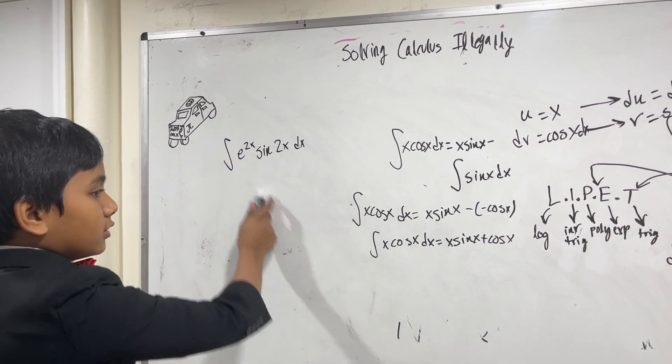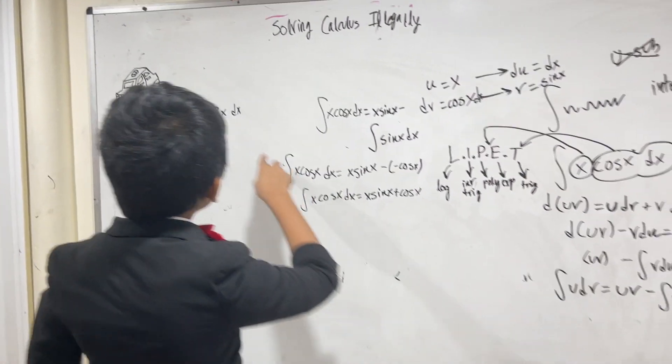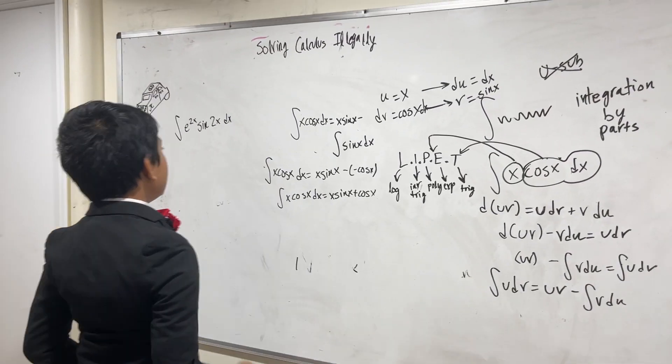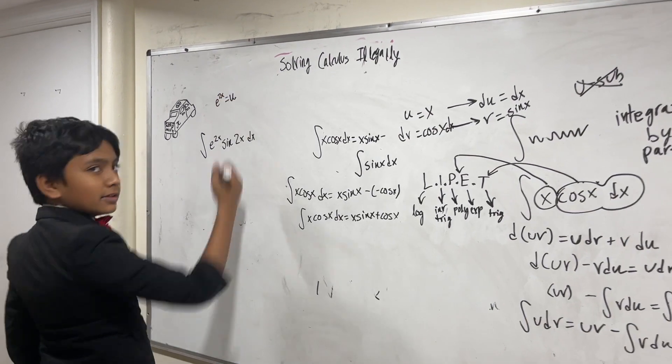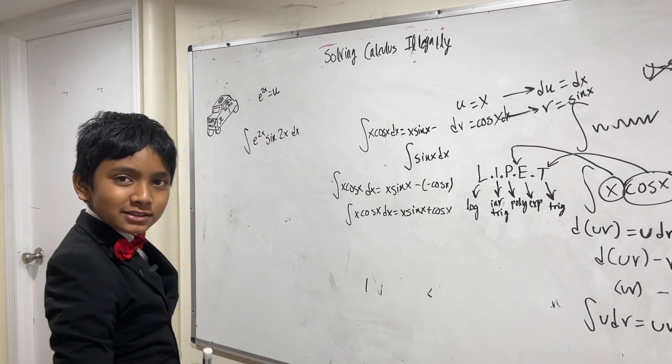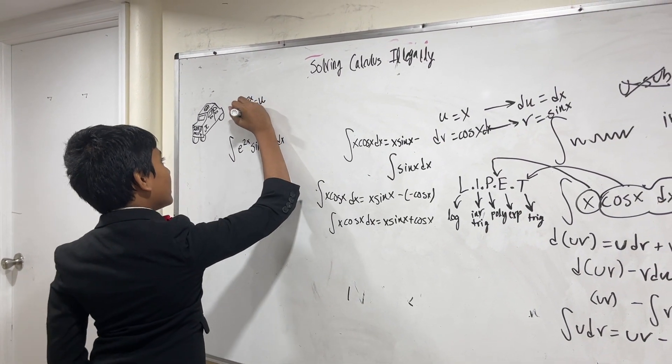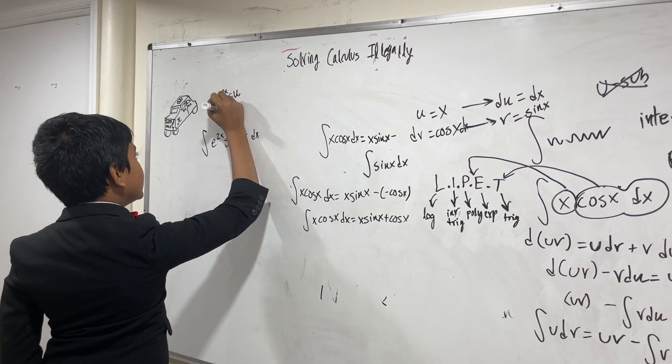I'm going to solve the integral of e to the 2x times sine of 2x with integration by parts. You plug this in over here. Sine 2x is a trig function, so that means e^(2x) must be u no matter what, and sine 2x is dv.